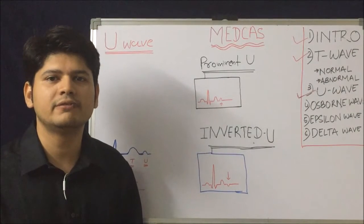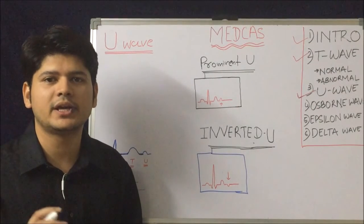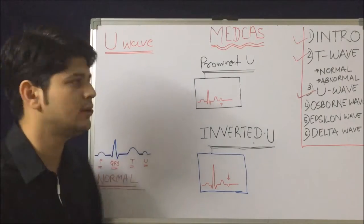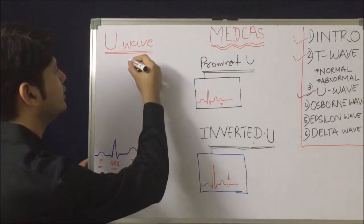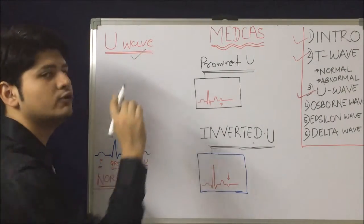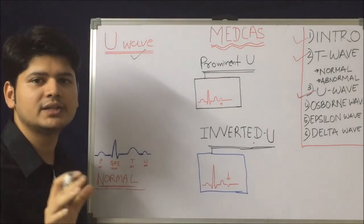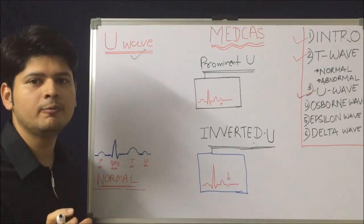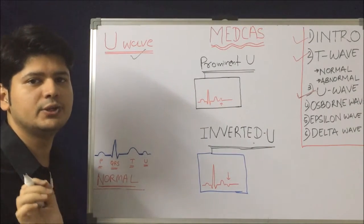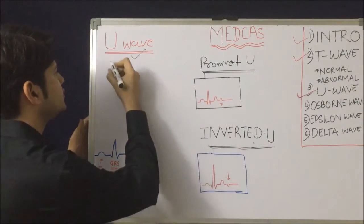We have seen up to the T wave, both normal and abnormal. Now we are going to discuss the U wave. Before we go into U wave abnormalities and the normal U wave, we will first understand the physiology of the U wave.